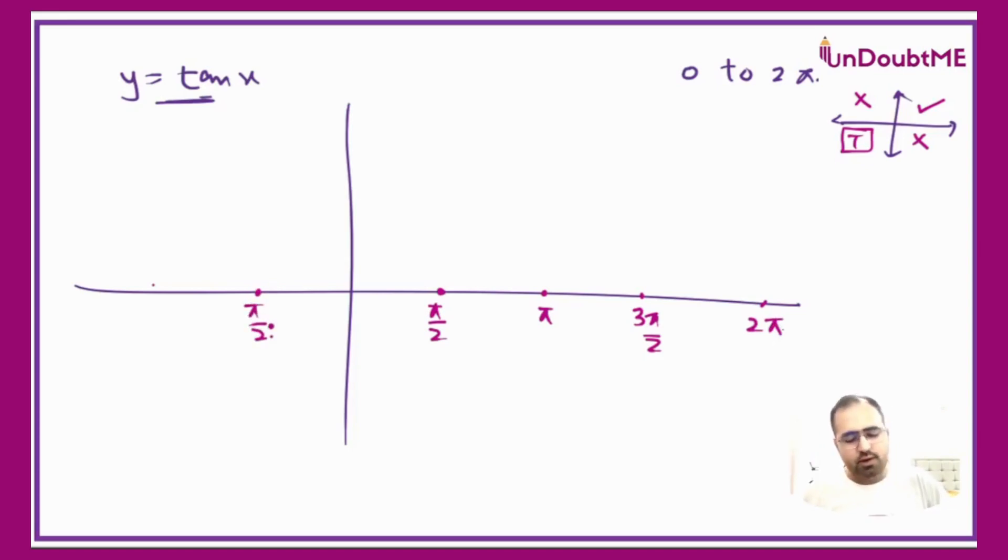For tan x, you may have noticed that tan is not defined at π/2. Whenever any function is not defined at any value, that value on the graph acts like an asymptote. This asymptote is a dotted line and it means that the function can never achieve any value when x equals that asymptote. At x equals π/2, the function can never achieve any value, so it will never touch this dotted line.